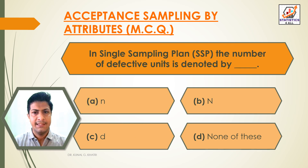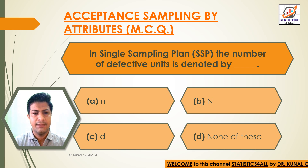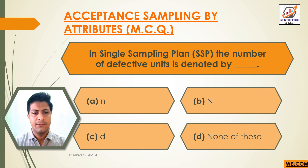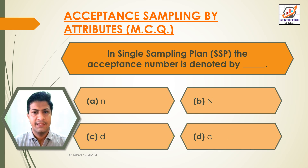Question 12: In a single sampling plan, the number of defective units is denoted by — Option A: small letter n. Option B: capital letter N. Option C: D. Option D: none of these. The answer is Option C — small letter D. In a single sampling plan, the number of defective units is denoted by D.